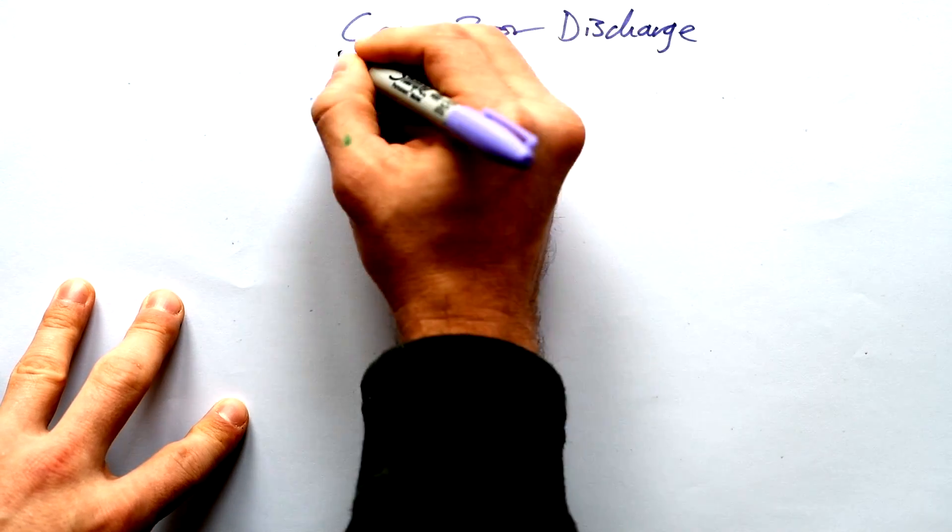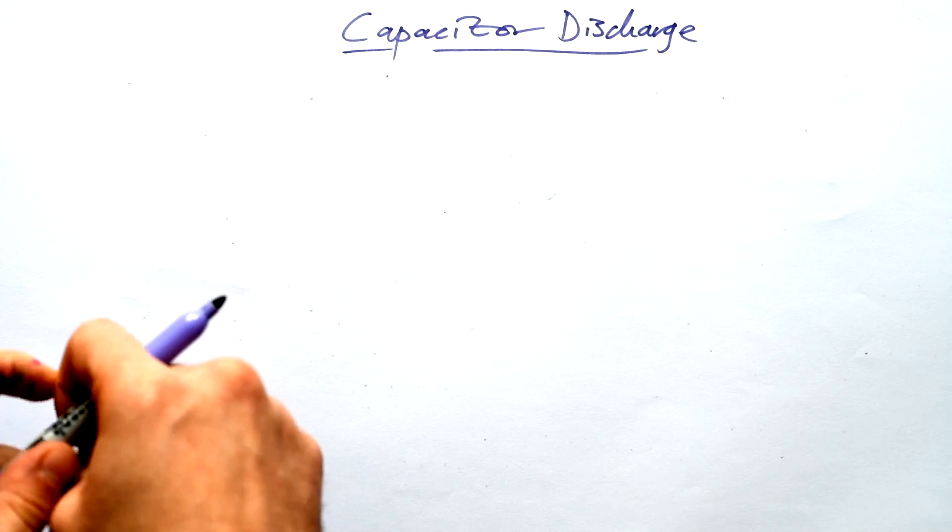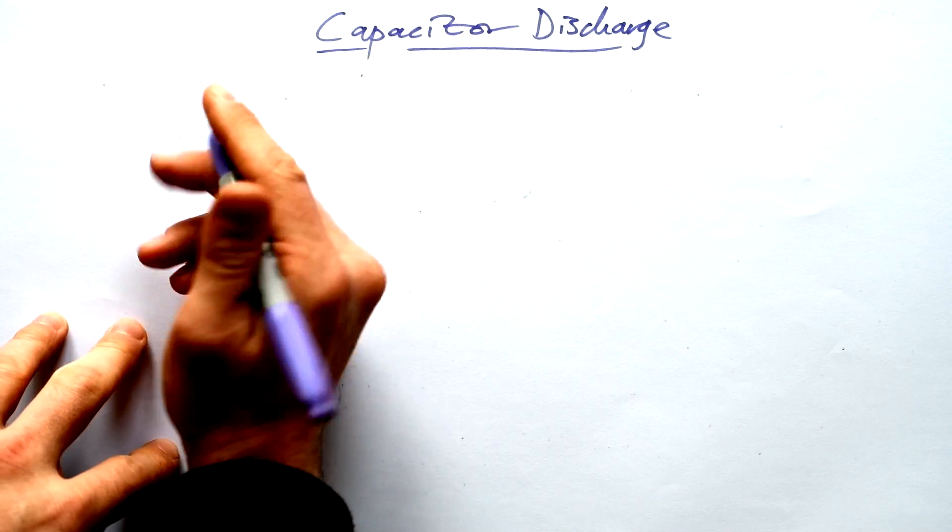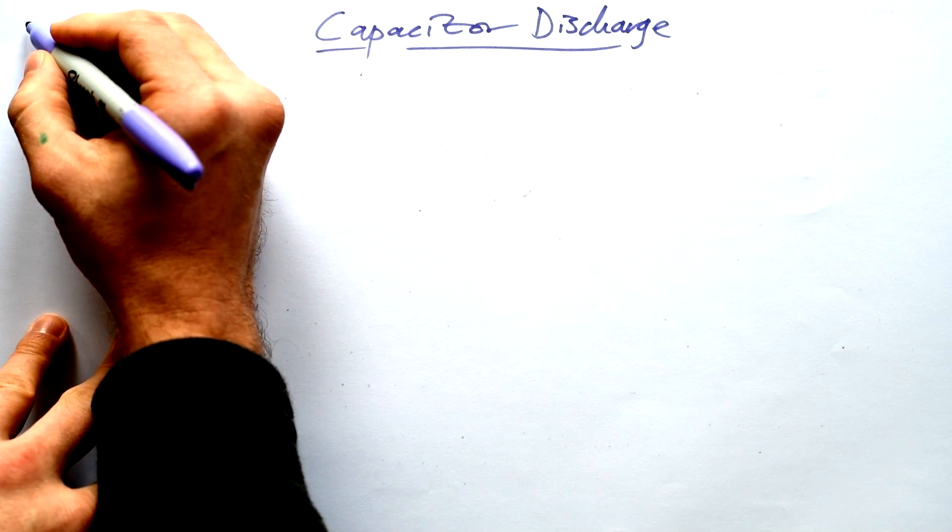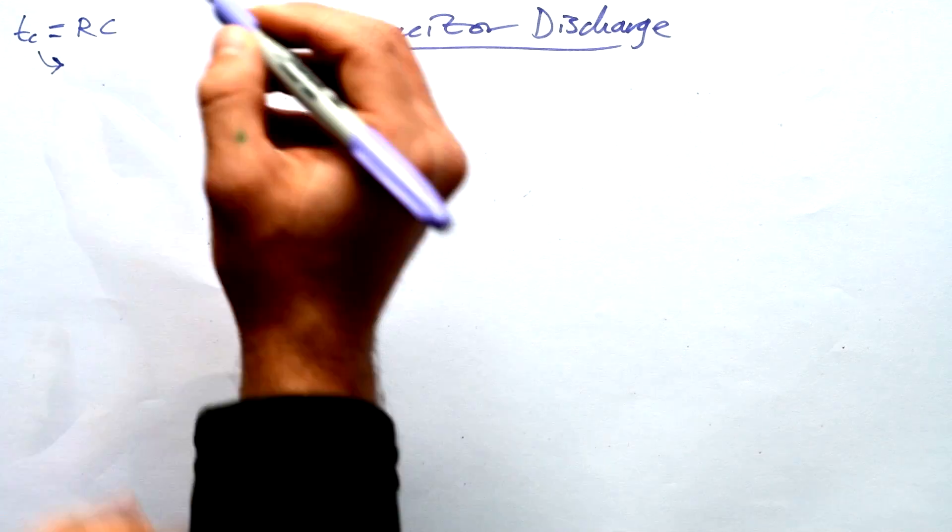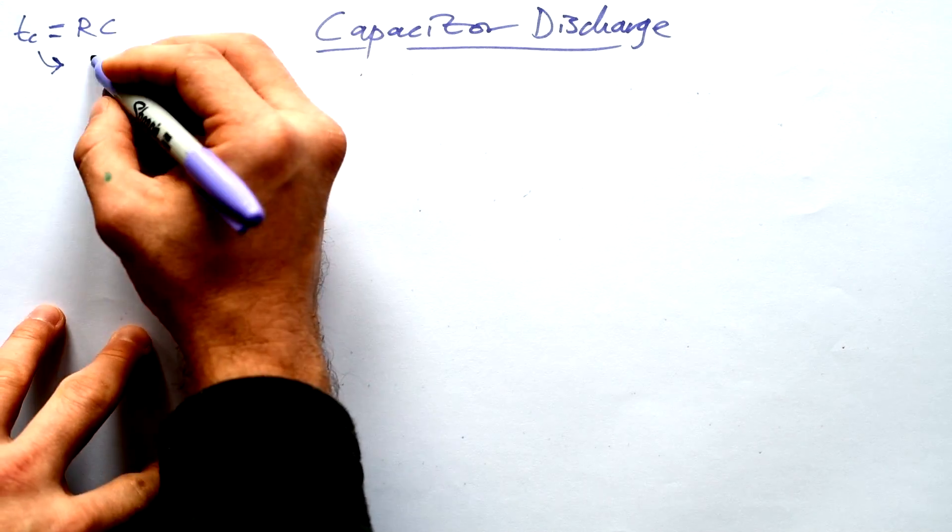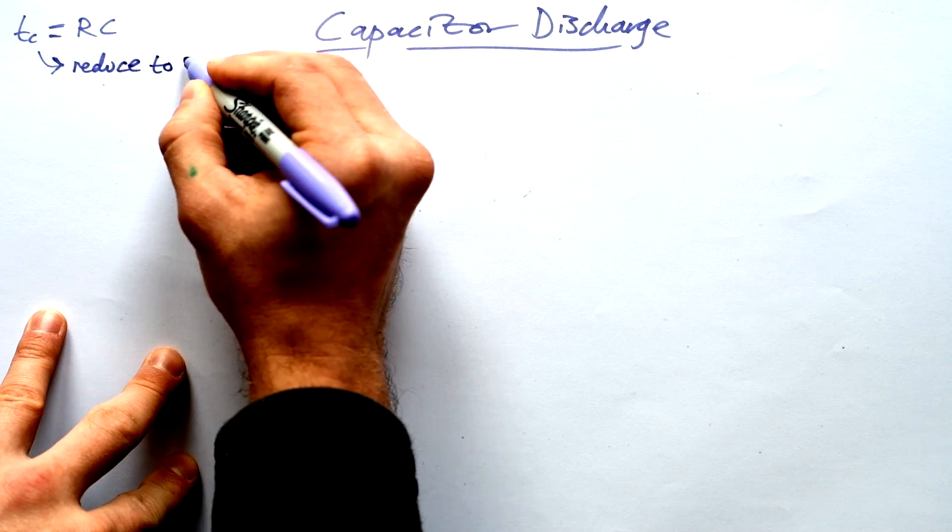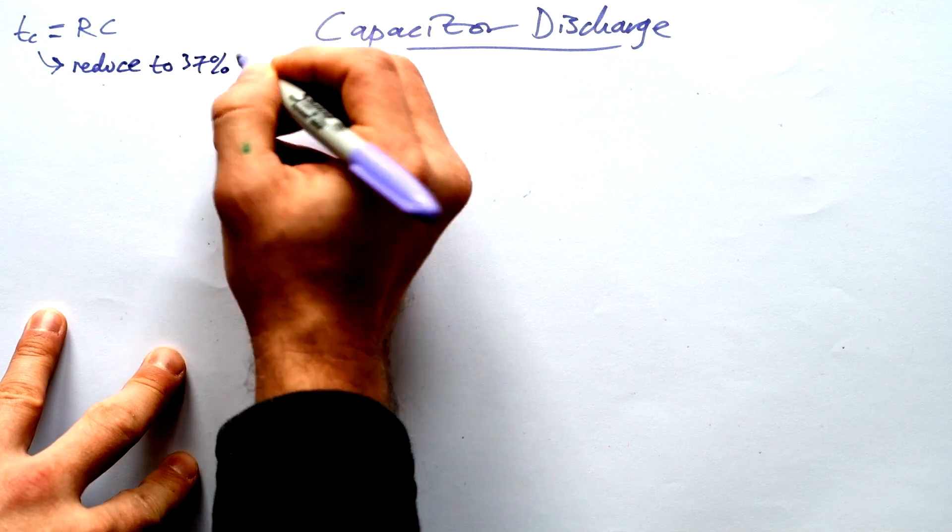All right, welcome to the A-Level Physics Practical, discharging a capacitor. Now, the first thing you need to remember is that the time constant for a capacitor-resistor combo is equal to RC. And that is the time it takes for the capacitor PD to reduce to 37% of its original value.